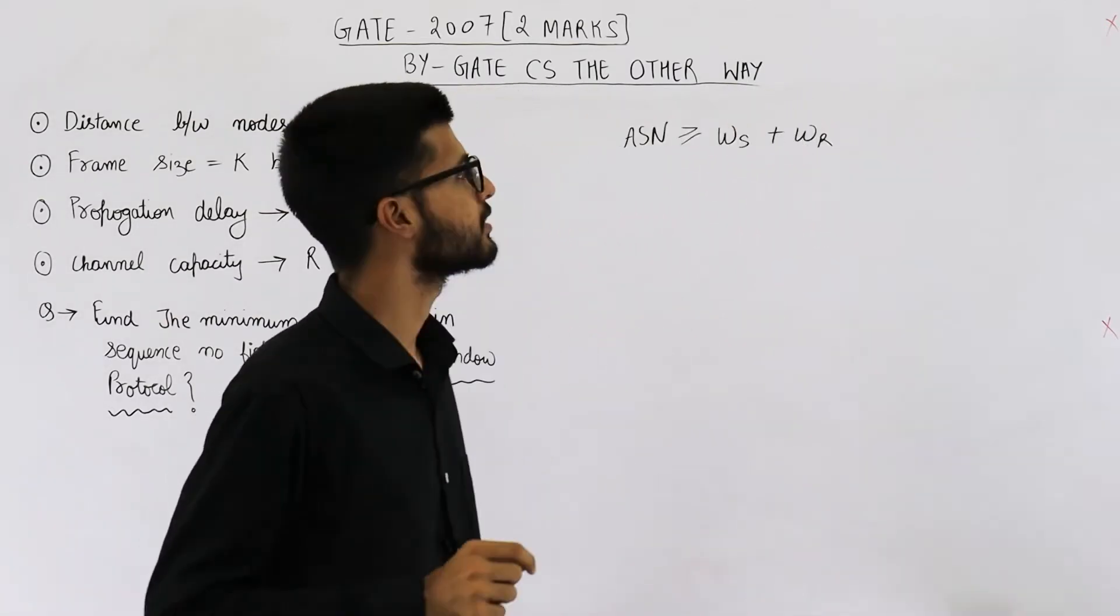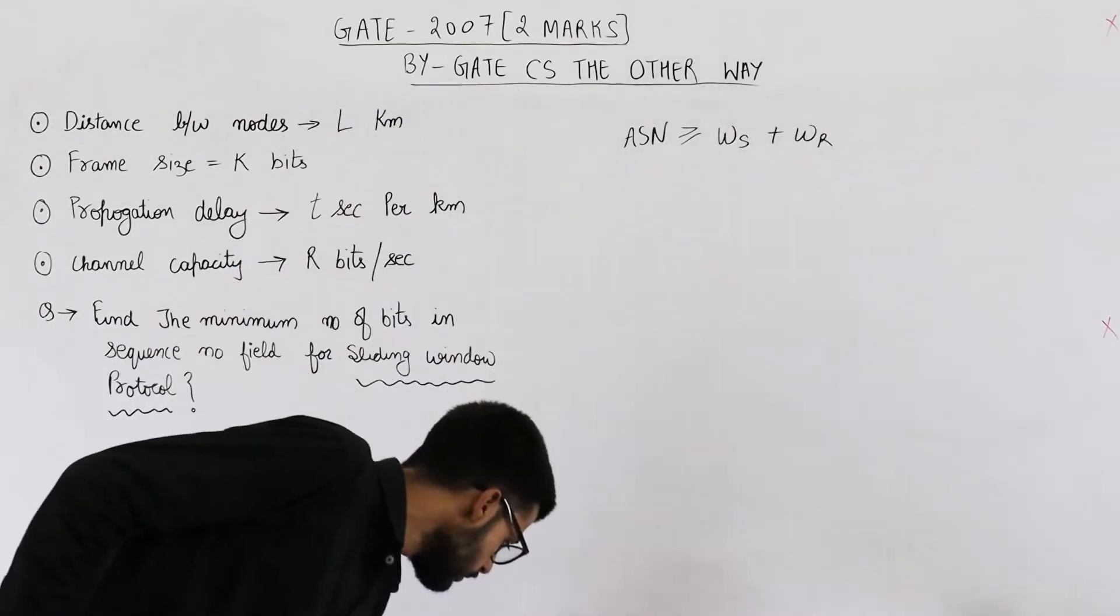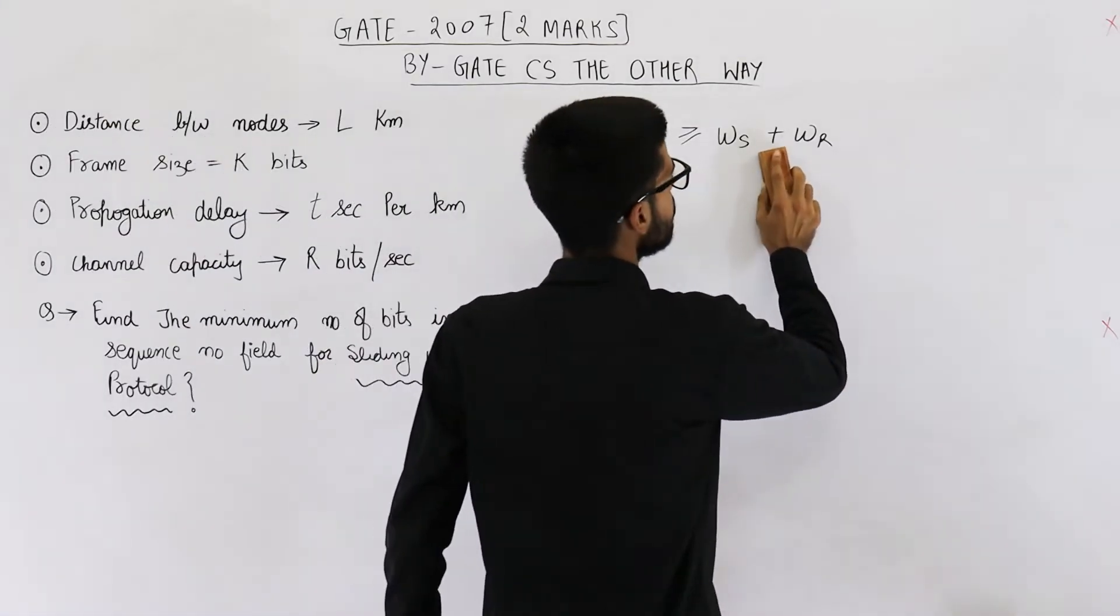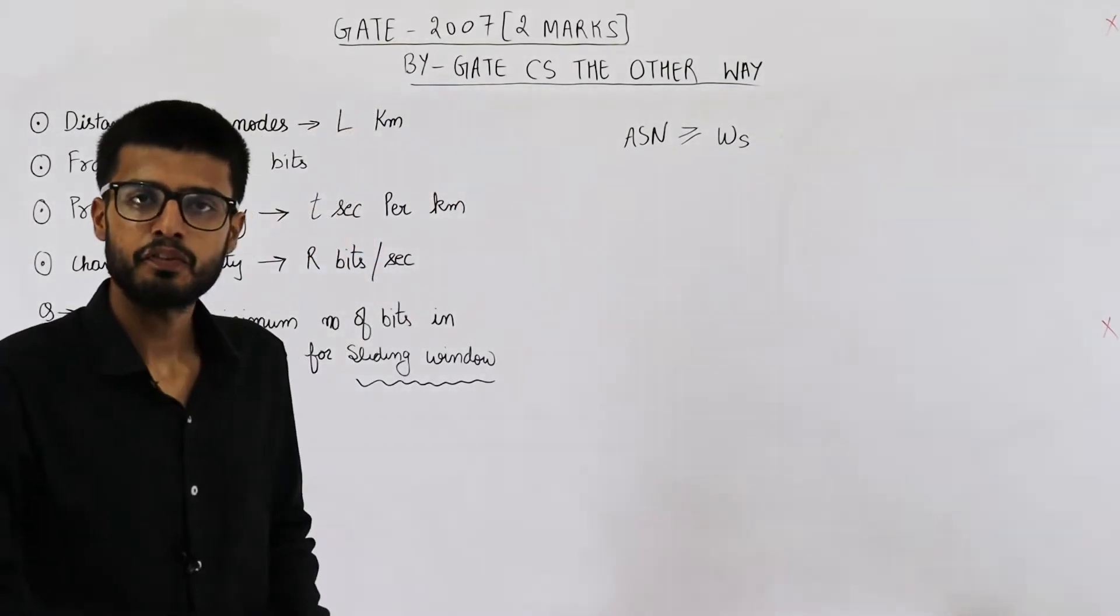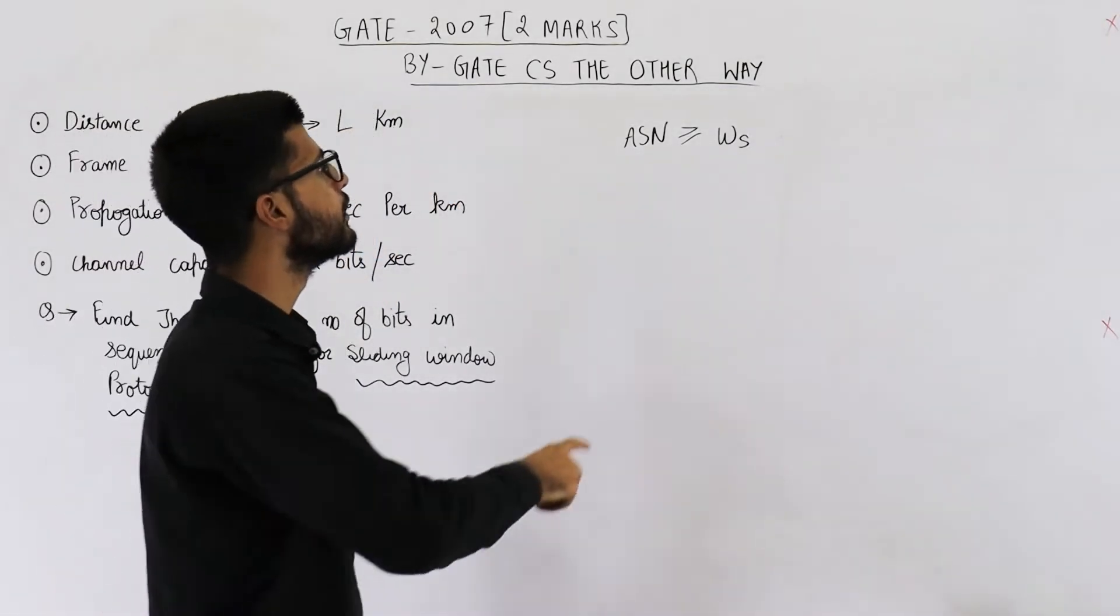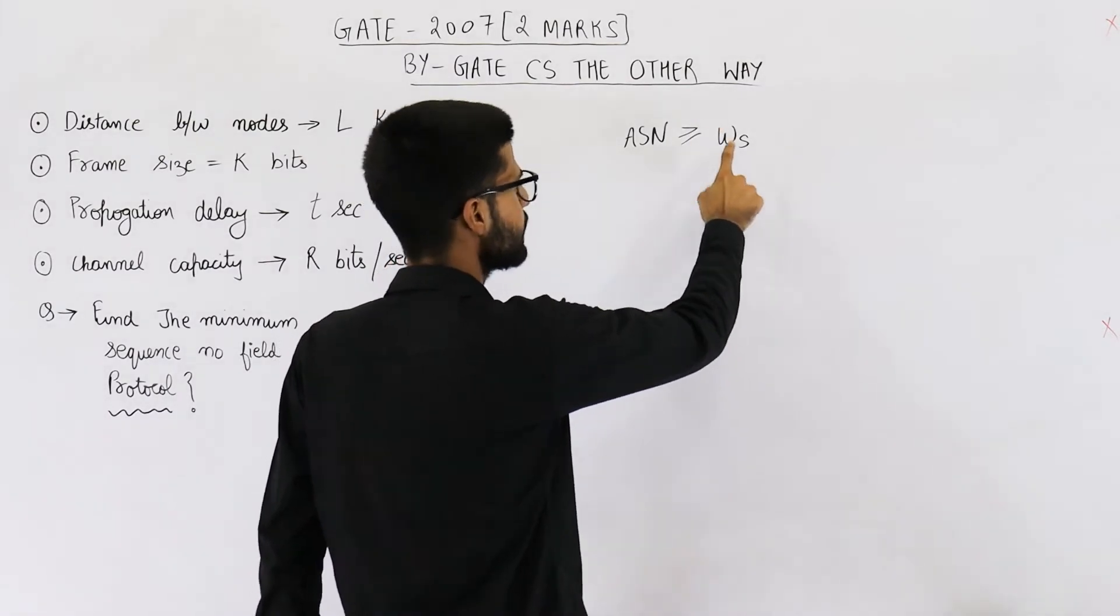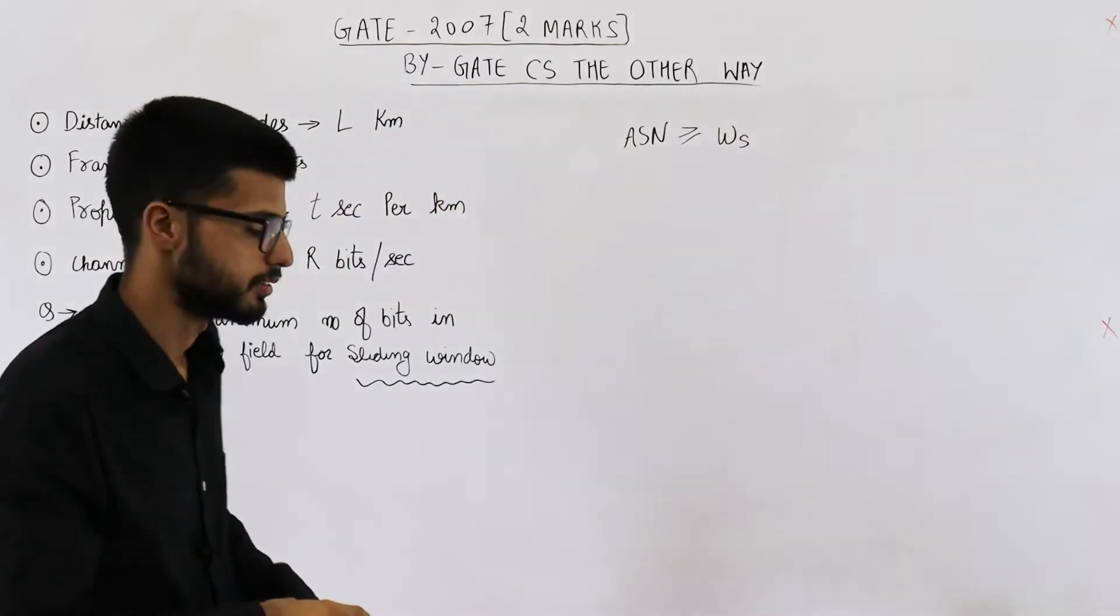Sliding window protocol is just a theoretic concept. So when we are talking about the general sliding window protocol, we can simply neglect receiver window. So in this case, the formula that will be used is available sequence numbers is greater than or equal to the sender window size.